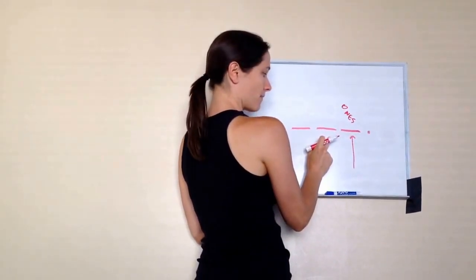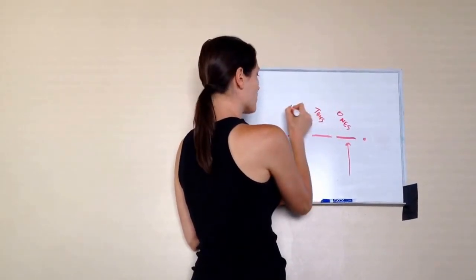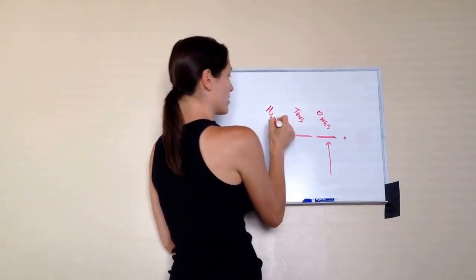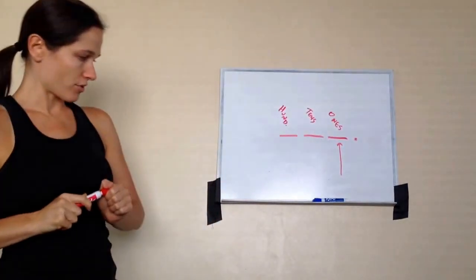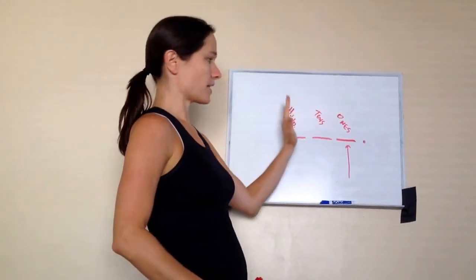Ones. Okay. Tens. Very good. Hundreds. Hundreds. Excellent job, Eli. I'm just going to put hund, okay, for hundreds. Good job, Eli. So we've got ones, tens, and hundreds.